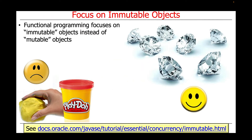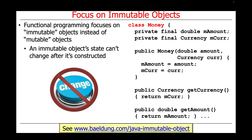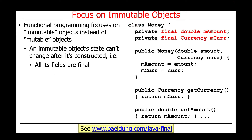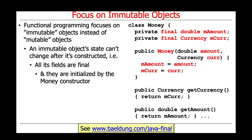Functional programming focuses largely on immutable objects rather than the mutable objects that are the focus of object-oriented programming. An immutable object's state cannot change after it's been constructed. Take, for example, the Money class shown here on this slide. The Money class contains only final fields, such as mAmount and mCurr. These fields are initialized in the constructor and can't be changed after they're given their initial value, which is the meaning of the Java final type qualifier.